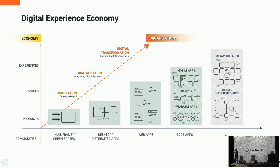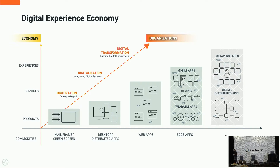Organizations are going through a step-by-step process through digitization, digitalization, and digital transformation. During digitization, they start moving from analog to digital. During digitalization, they start connecting systems — that's where different types of security standards, integration standards, and API standards come into the picture. During the digital transformation stage, they start building digital experiences on top of the two layers they have created.